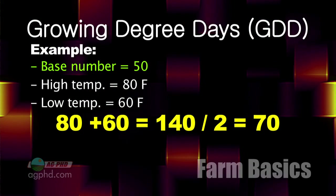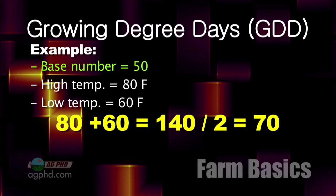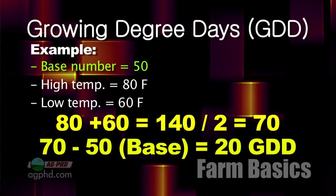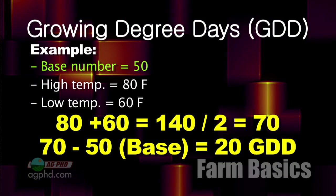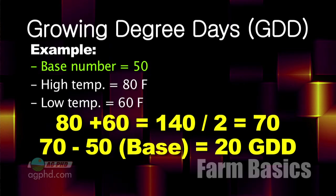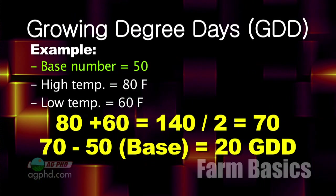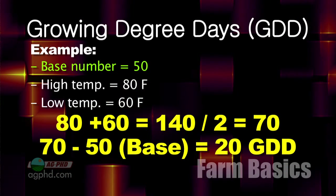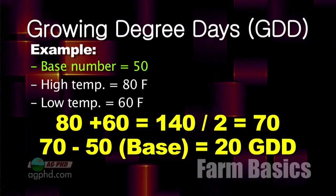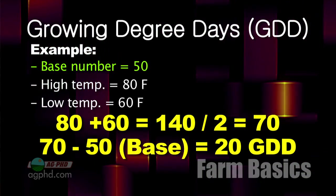We add those two numbers together — that's 140 — and divide by 2, which equals 70. Then we subtract the base, which is 50. So on a day where the high was 80 degrees and the low was 60, we would have 20 growing degree days accumulated that day.